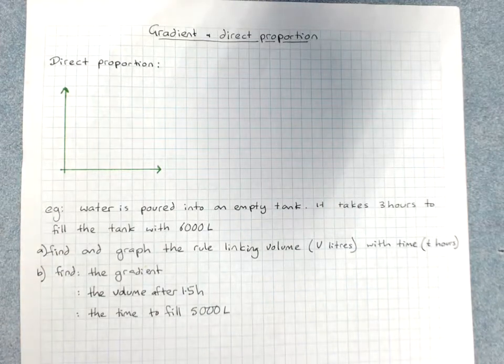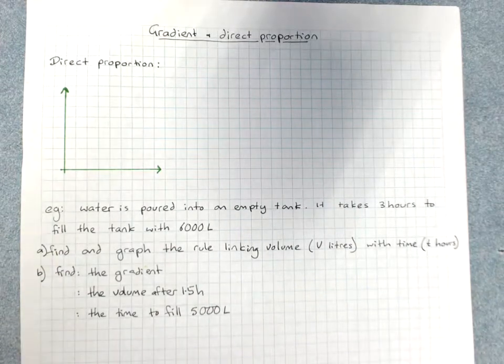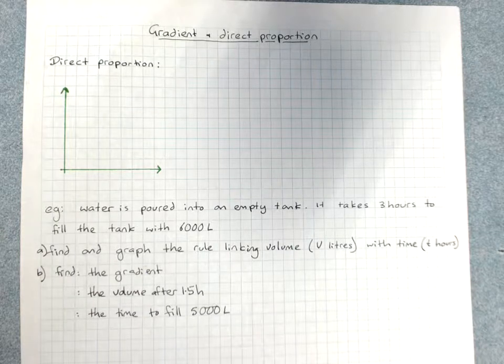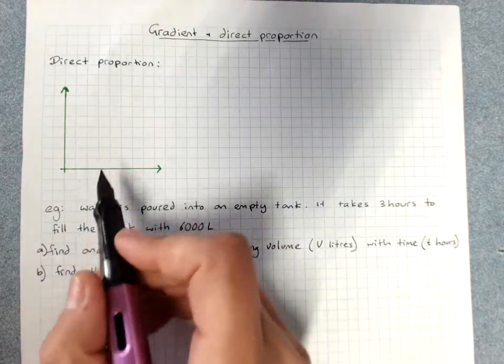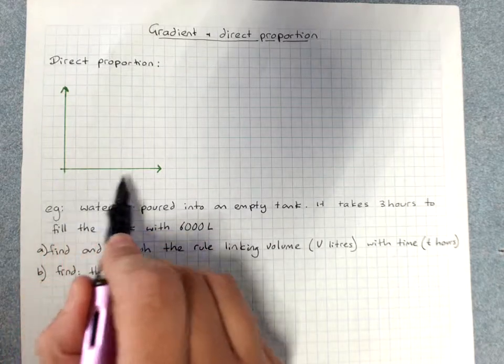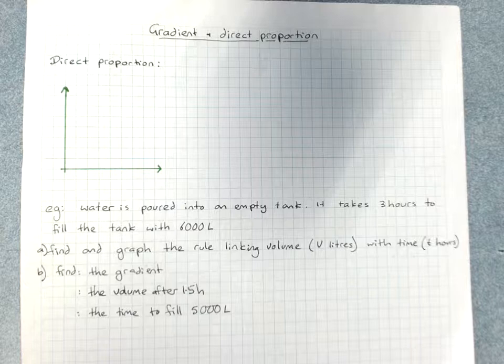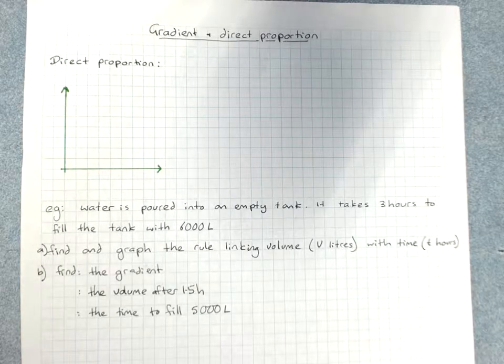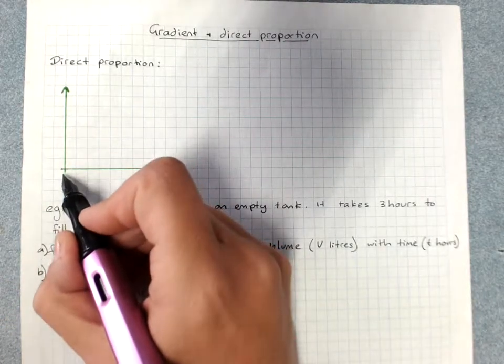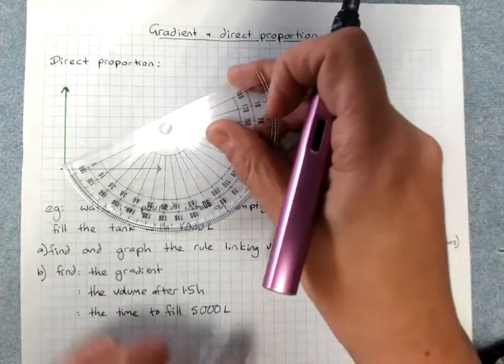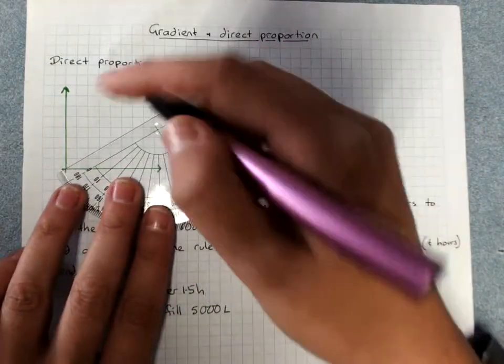Gradient and direct proportion. Direct proportion is when two variables are directly related. As one variable increases, the other variable increases, and at 0 on the x, we're at 0 on the y. That is, the line passes through the origin.